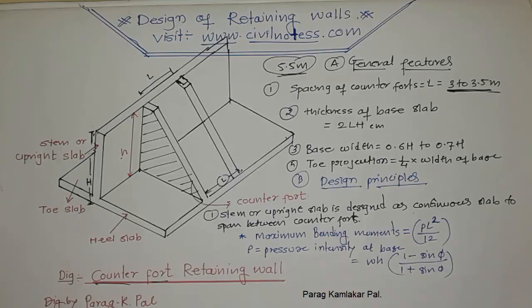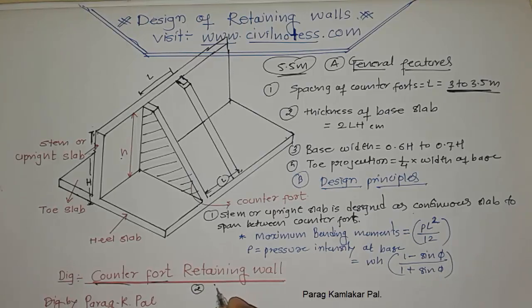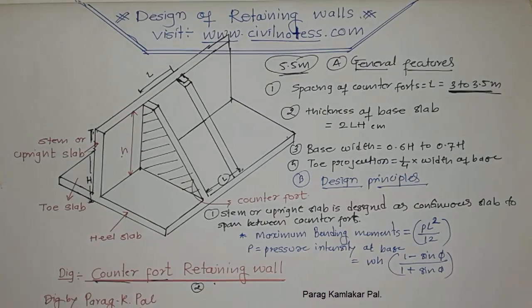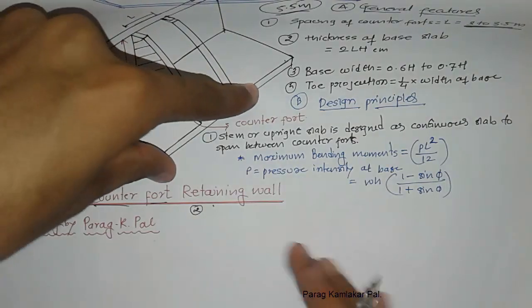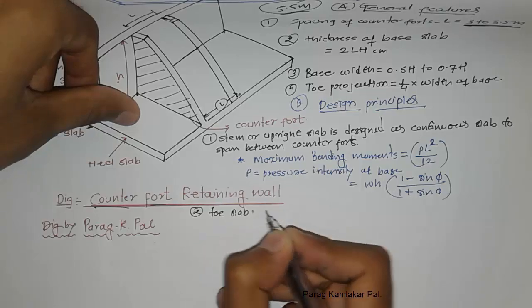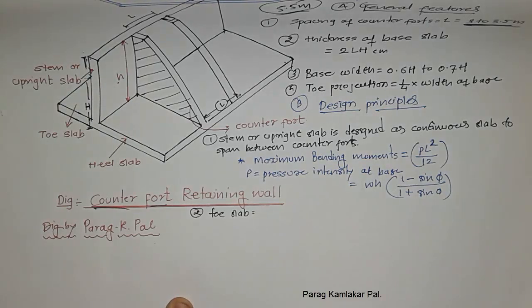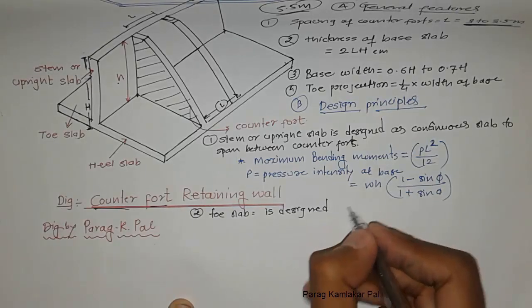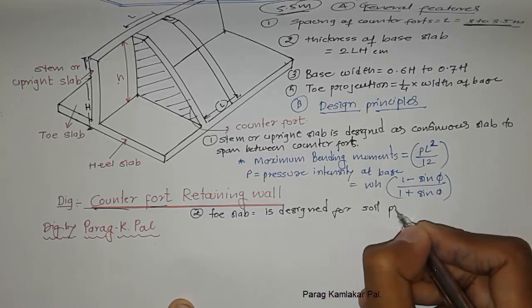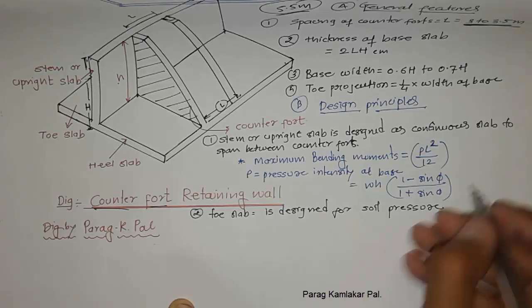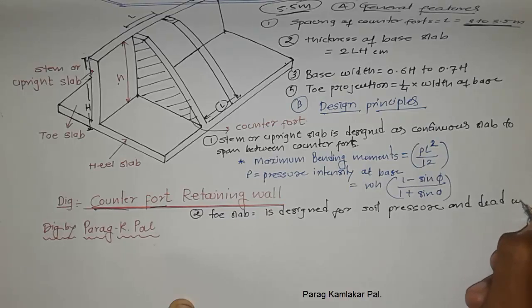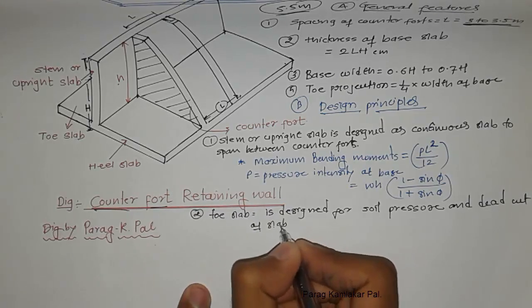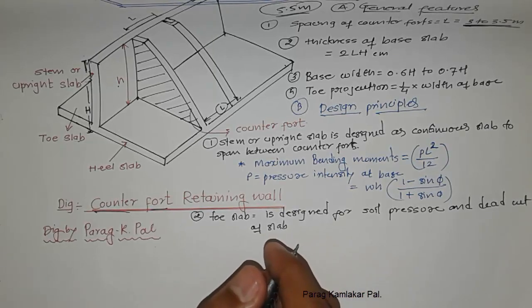The toe slab is designed for soil pressure and the dead weight of the slab. The toe slab is the portion of the base slab projecting in front of the stem, and it is designed to resist the upward soil pressure and its own dead weight.